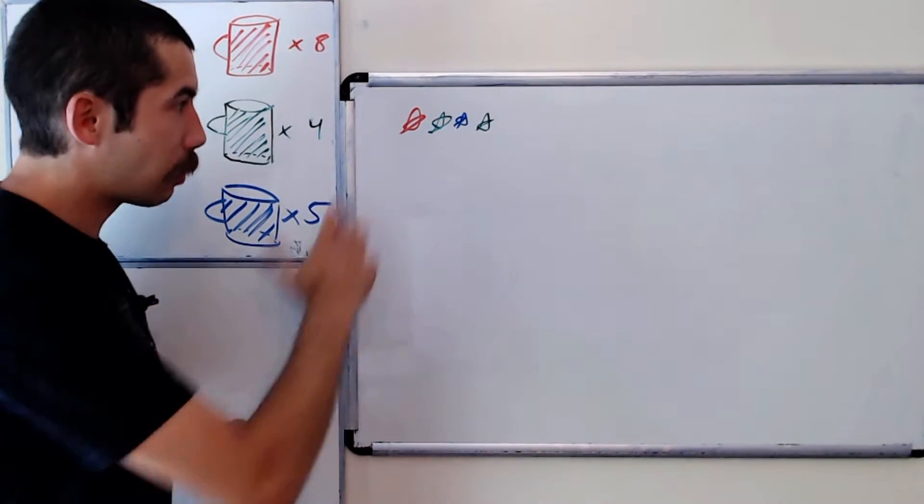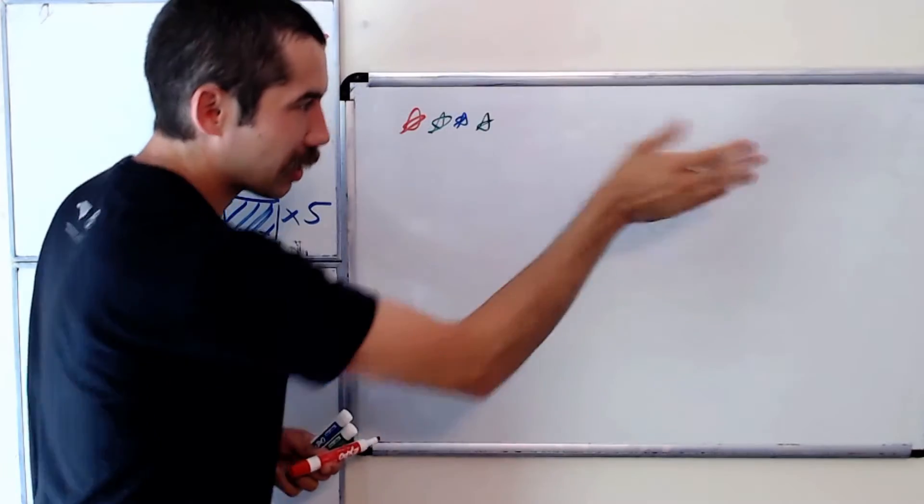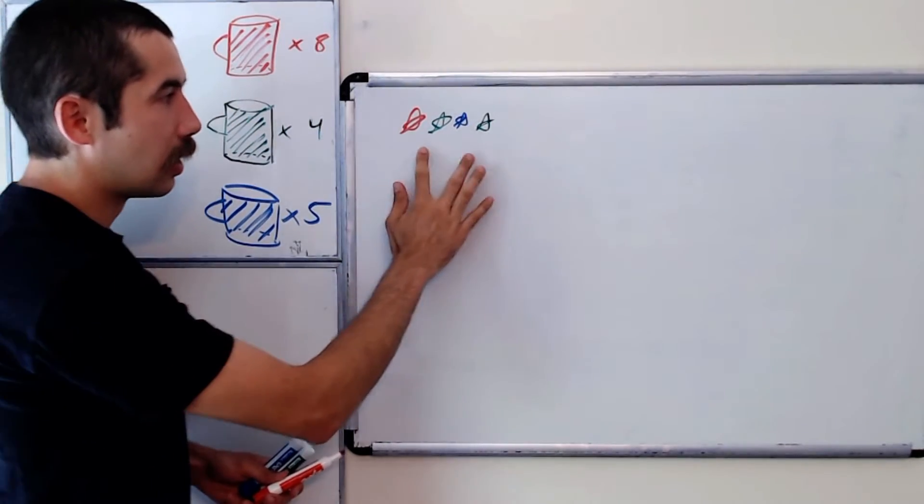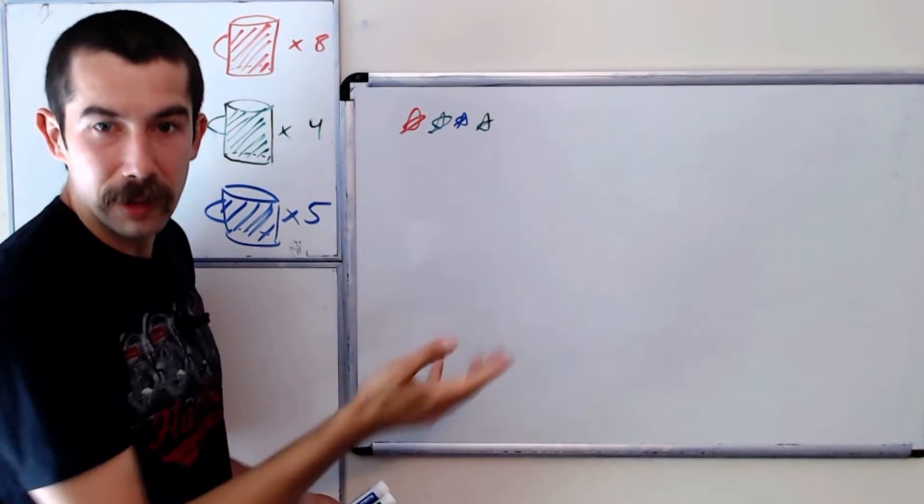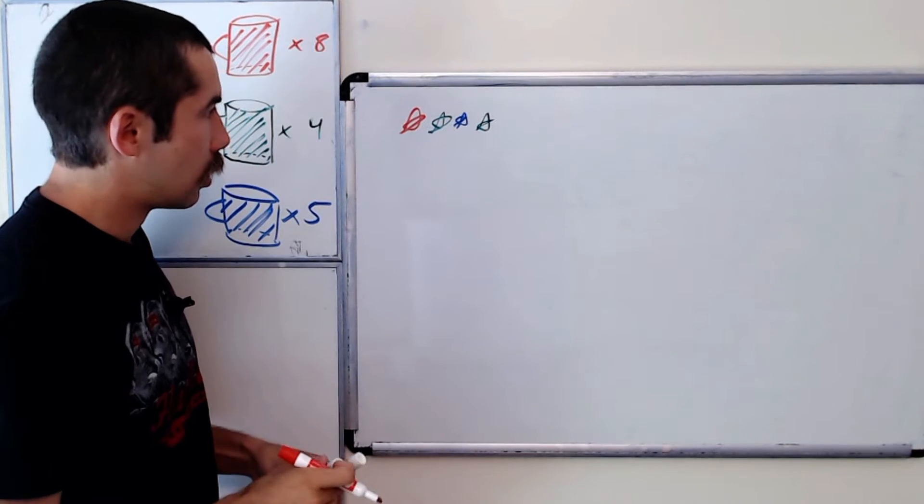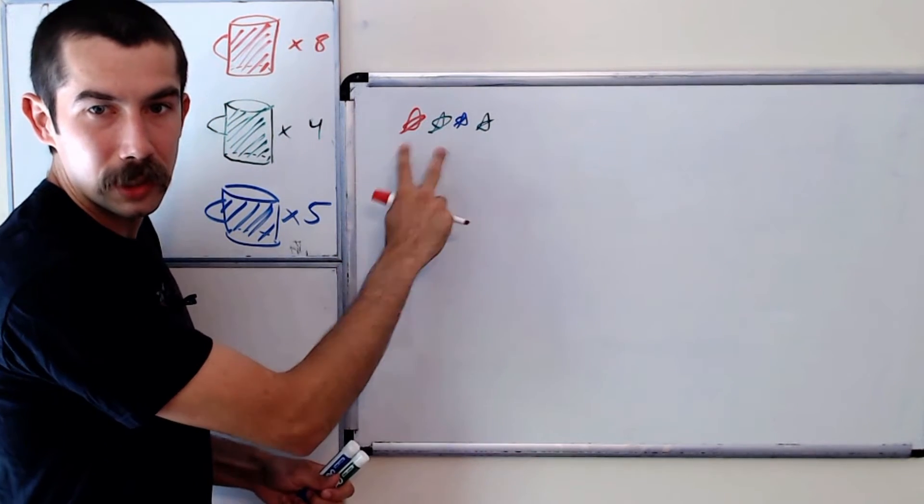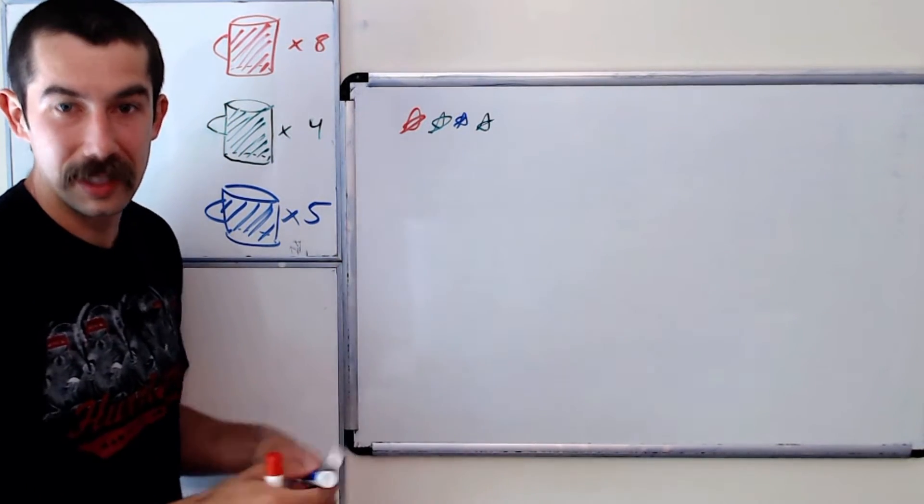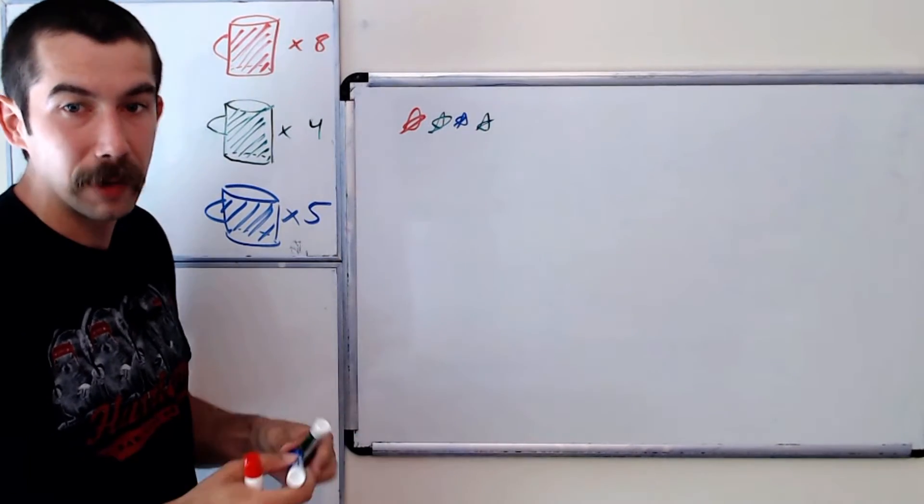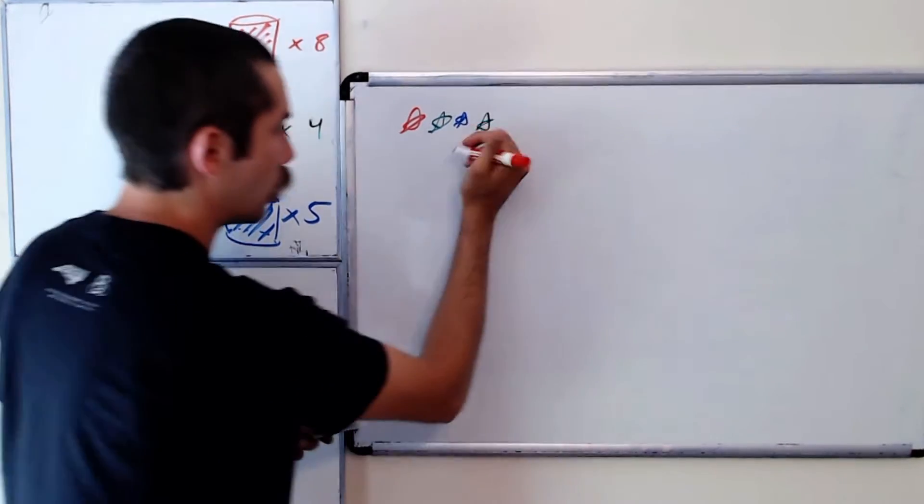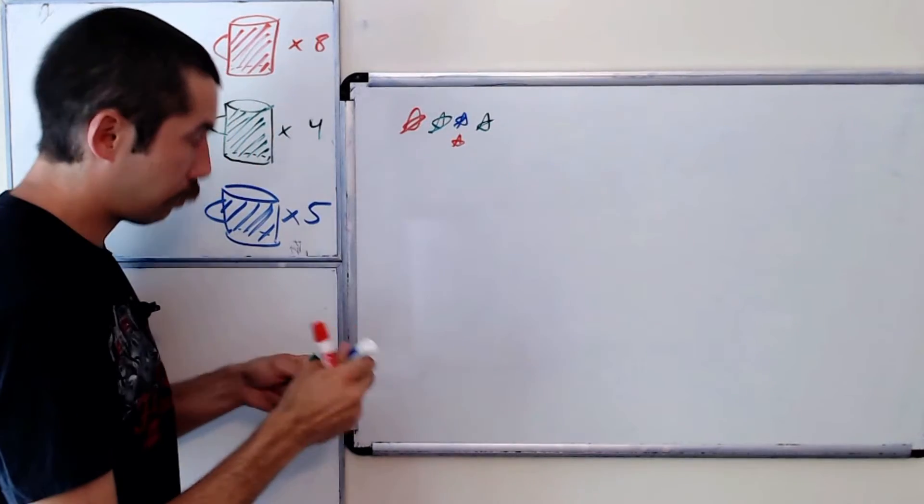So this would be, and then maybe there's more mugs, but don't worry about that. This would be allowed because there's no green next to green. So something to note is we could switch a red and a blue, and it's going to still be a fine arrangement of the mugs. So if we switch the blue and the red, we'd have this arrangement, which is allowed.